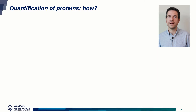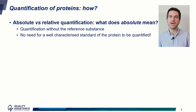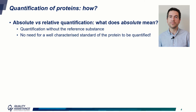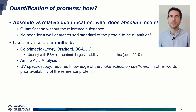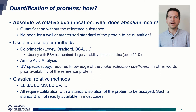Let's now see how a therapeutic protein can be quantified. What's the difference between absolute and relative quantification? Absolute quantification means that no reference substance is required. The usual absolute methods are the colorimetric tests such as Lowry, Bradford, or BCA, amino acid analysis, or UV spectroscopy, even if the latter is not fully absolute as it requires the knowledge of the molar extinction coefficient — in other words the availability of the reference protein. The traditional relative methods are ELISA, LC-MS, or LC-UV. They all require a standard solution of the protein that is not readily available in most cases.